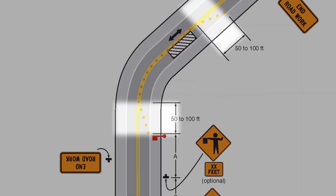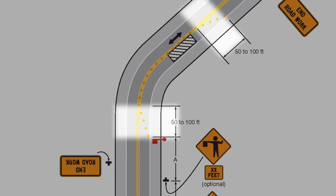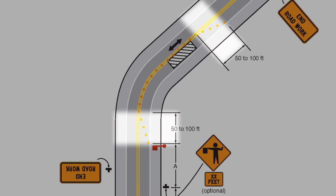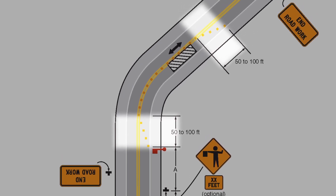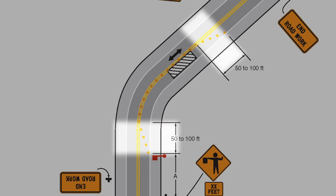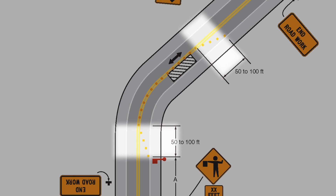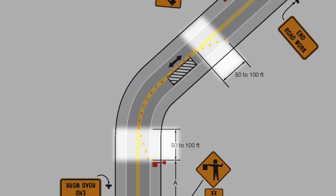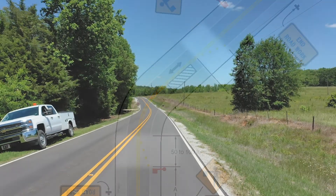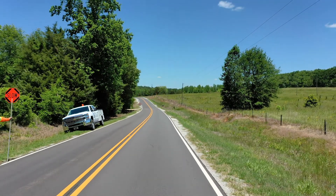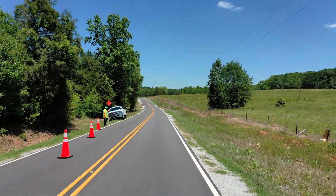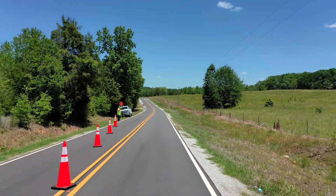The transition area is a section of highway where road users are redirected out of their normal path. The taper used in the transition area in this application is the one-lane, two-way traffic taper. It is 50 to 100 feet in length.